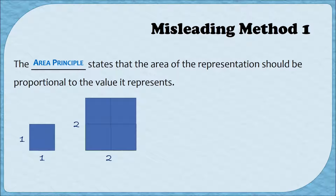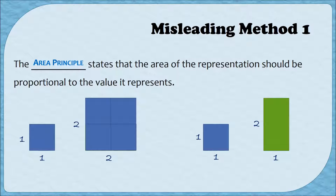So when you double both the width and the height of the representation, you much more than double the area. The way to use the area principle appropriately is to only increase one dimension. Here I've kept the width of the boxes the same but doubled the height to two. Now we can see that the twice-as-large rectangle actually does contain two of the blue boxes, so this representation is proportional to the amount we want it to represent.